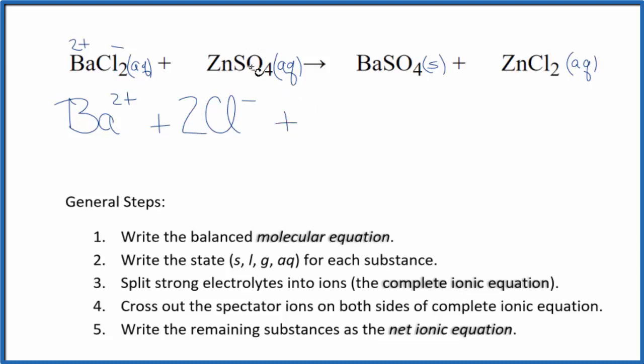We also have the zinc, which is always two-plus, even though it's a transition metal. It's always two-plus. And this whole sulfate, always two-minus. So we have the zinc ion and the sulfate ion. And these are the reactants in our net ionic equation.